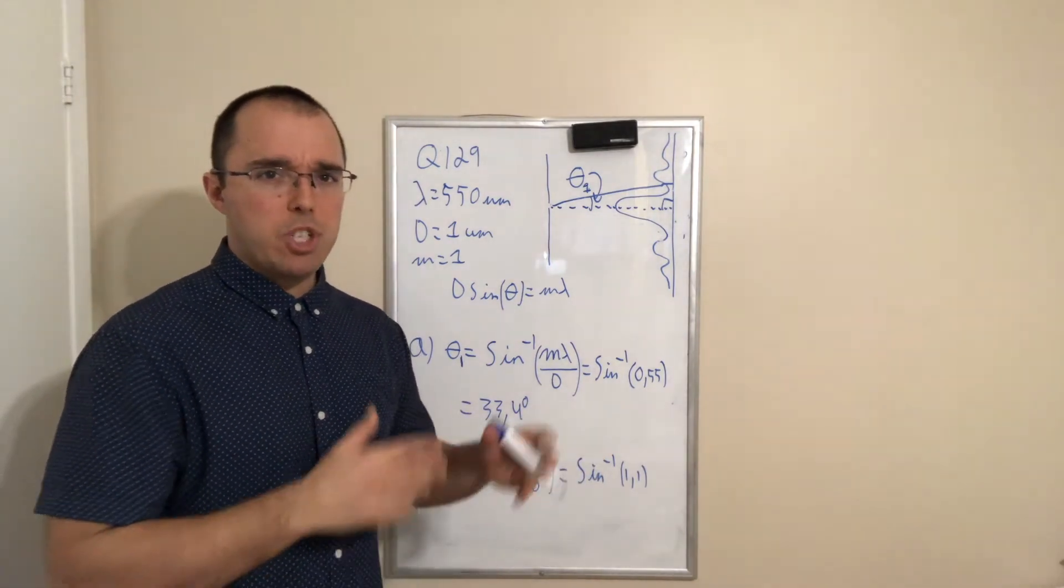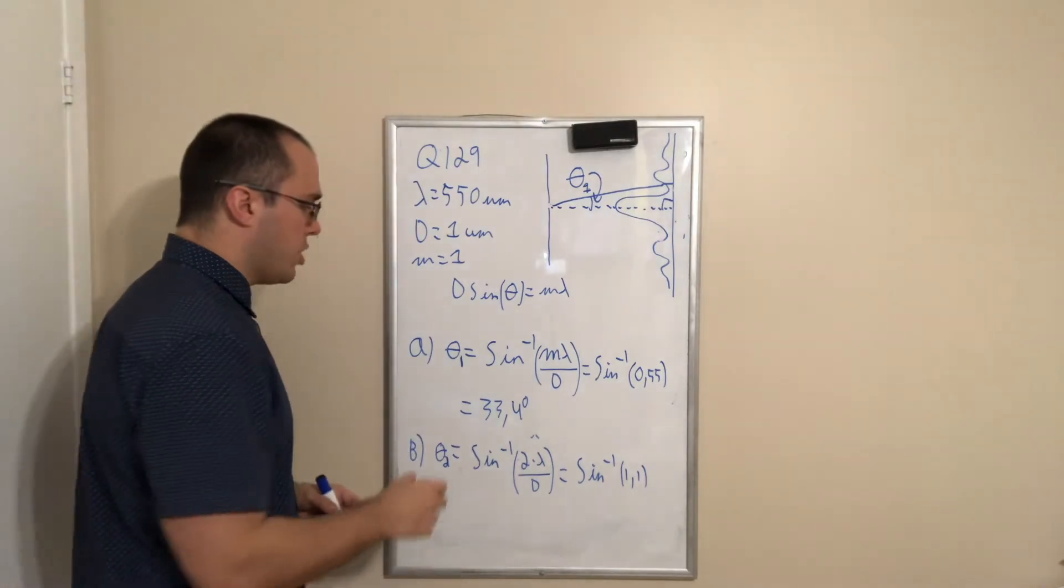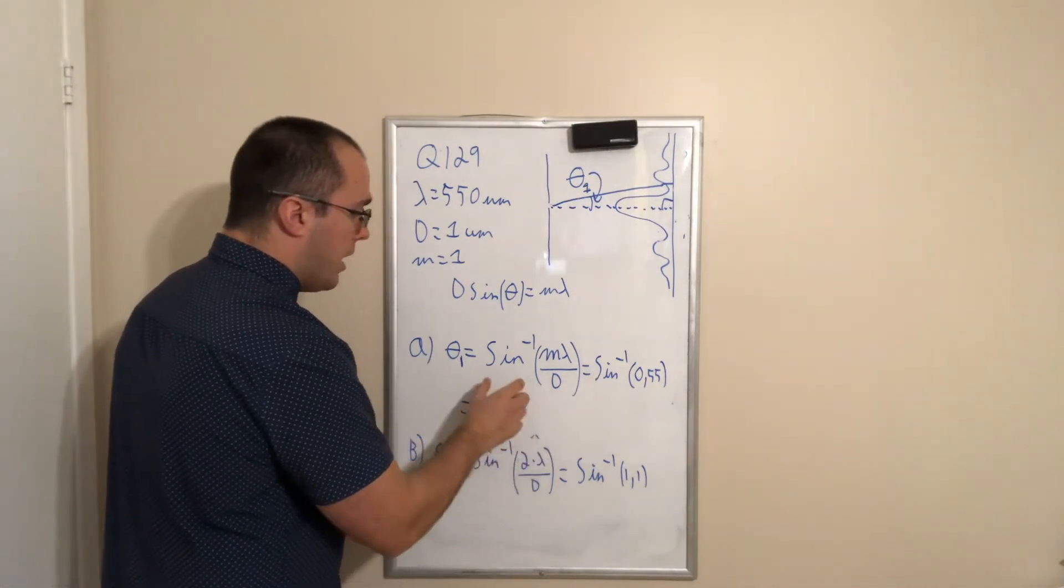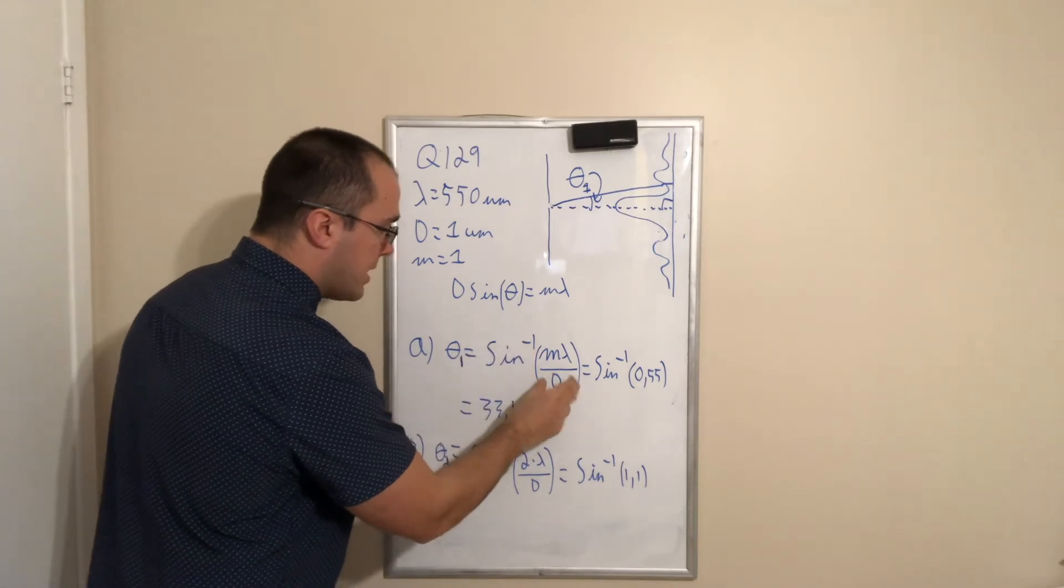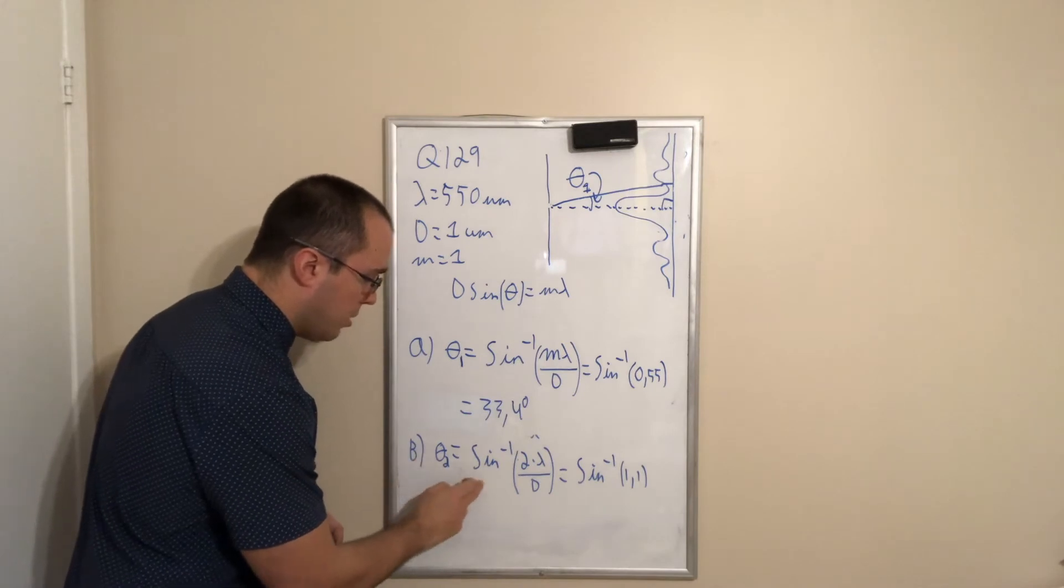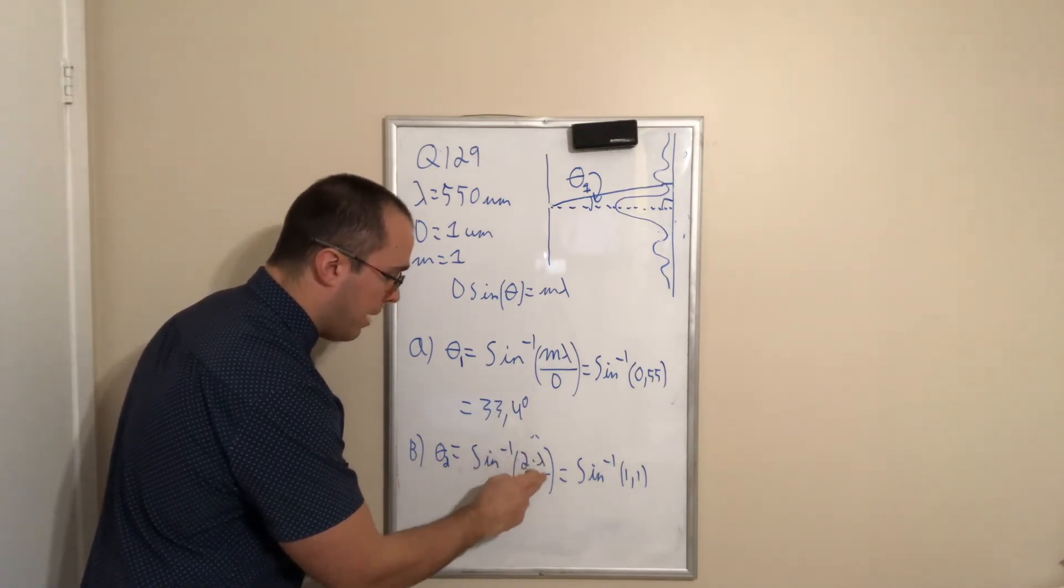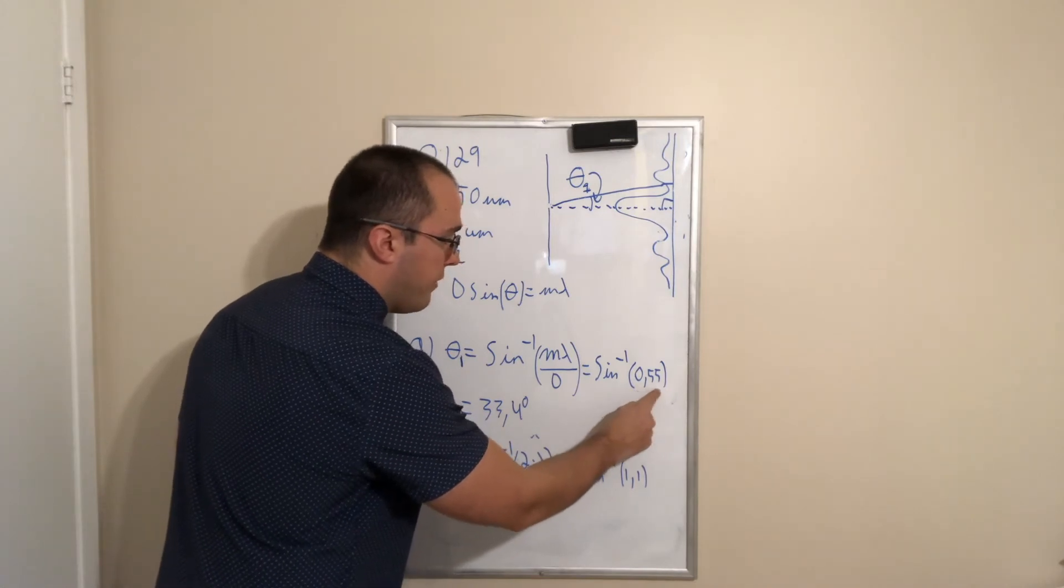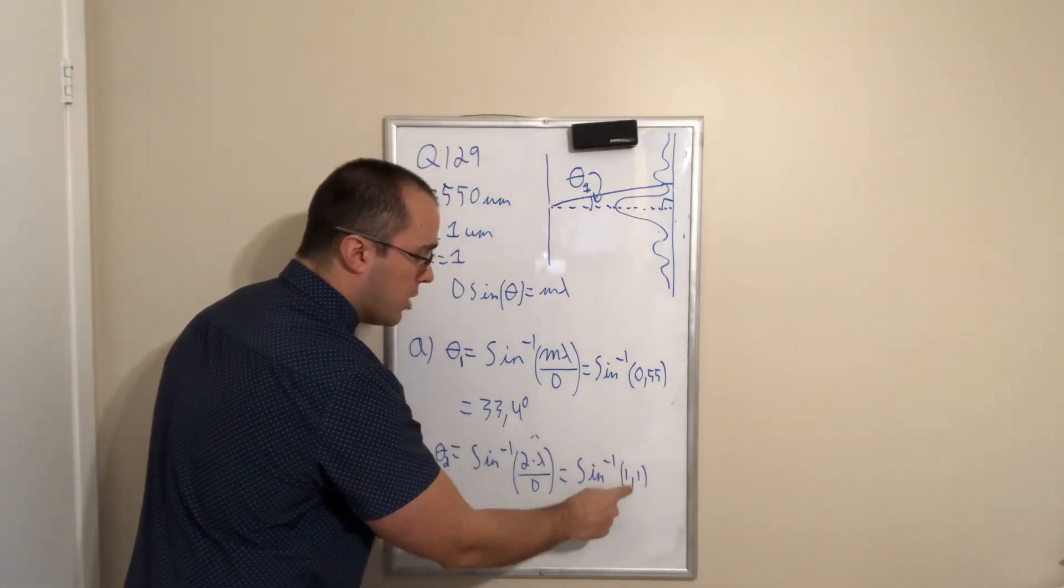But I decided to take another approach in this example, and this approach is simply to use this formula again for the angle. We use the same value except that m is now equal to 2. So theta 2 is equal to sine inverse of 2 multiplied by lambda divided by d. The value in part A was 0.55. In part B, it is 1.1.